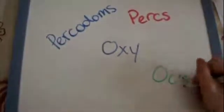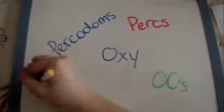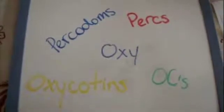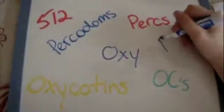Oxycodone has many slang or street names. You may hear it referred to as any of the following: Percodomes, Perks, Oxy, OCs, Oxycottons, Blue, 512, Roxys, Blue Dynamite, Hillbilly Heroine, Kicker, or OS.